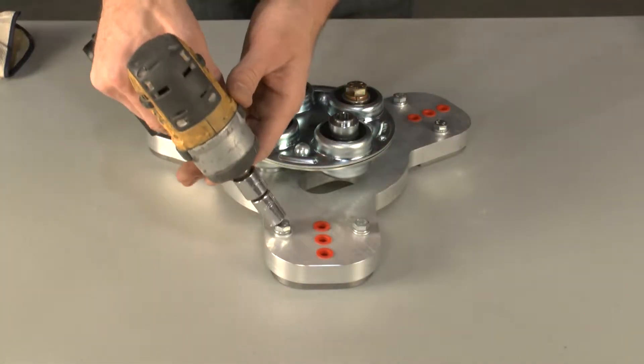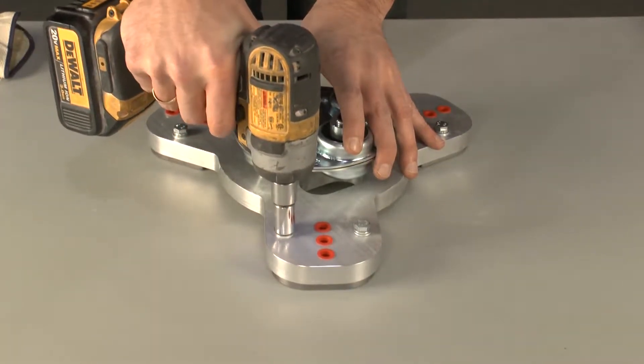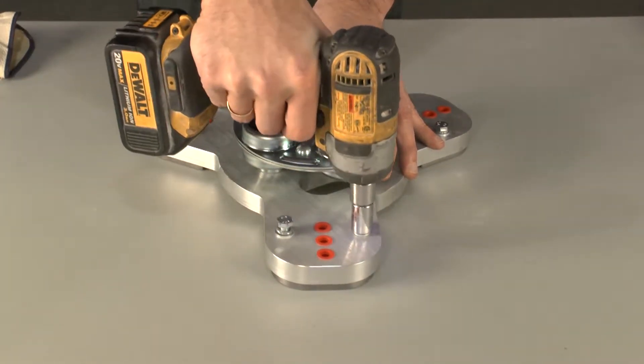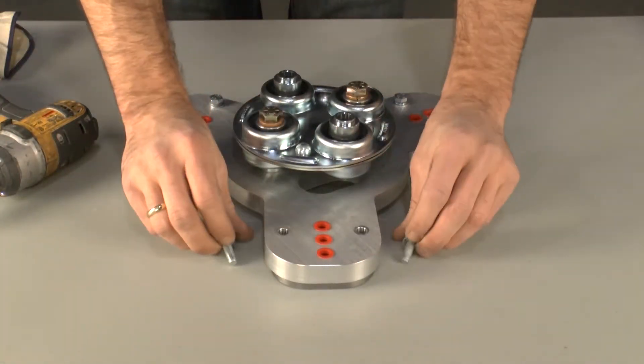Remove the old EG adapter with an M10 socket and impact wrench. Clean the surface of the tool plate with either a rag for light buildup or a wire brush for heavy buildup.